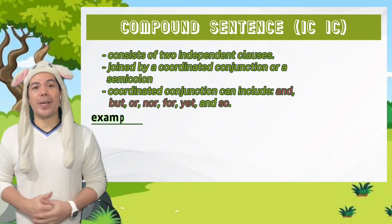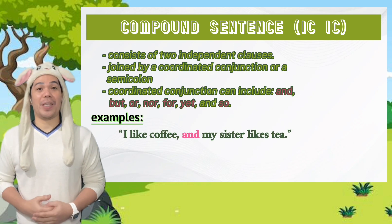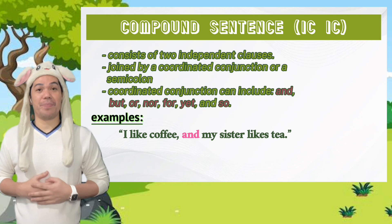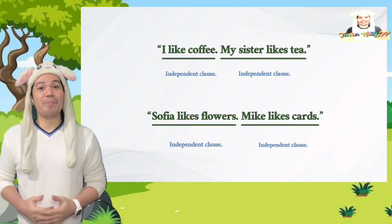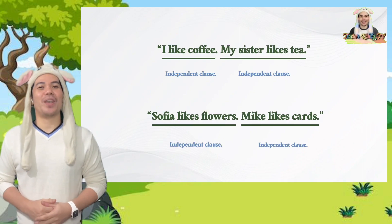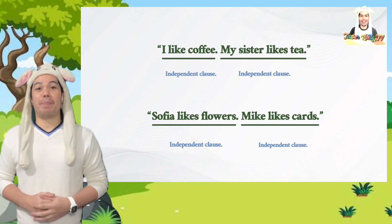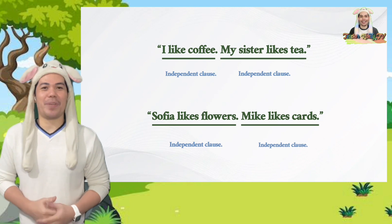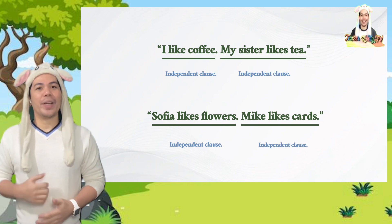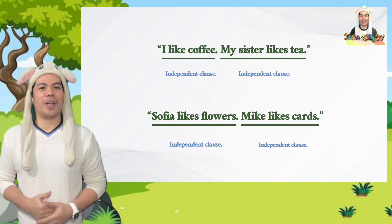A few examples of compound sentences are: "I like coffee and my sister likes tea," and "Sophia likes flowers, but Mike likes cards." These sentences show two independent clauses that each make sense on their own as separate sentences. We need to know that we use commas before coordinating conjunctions.